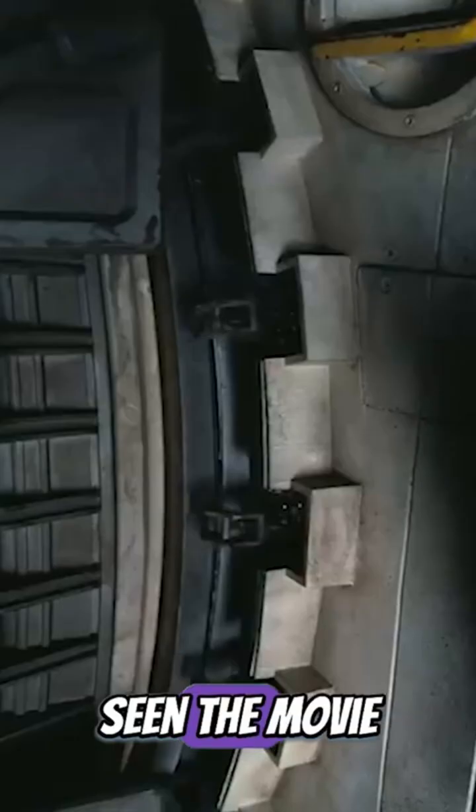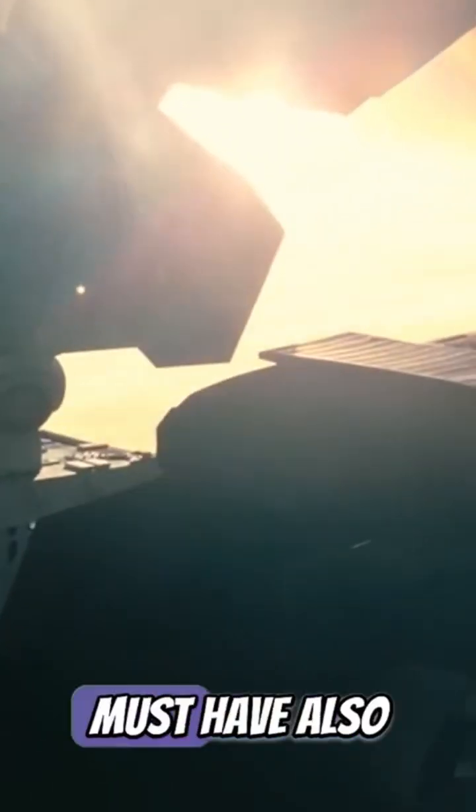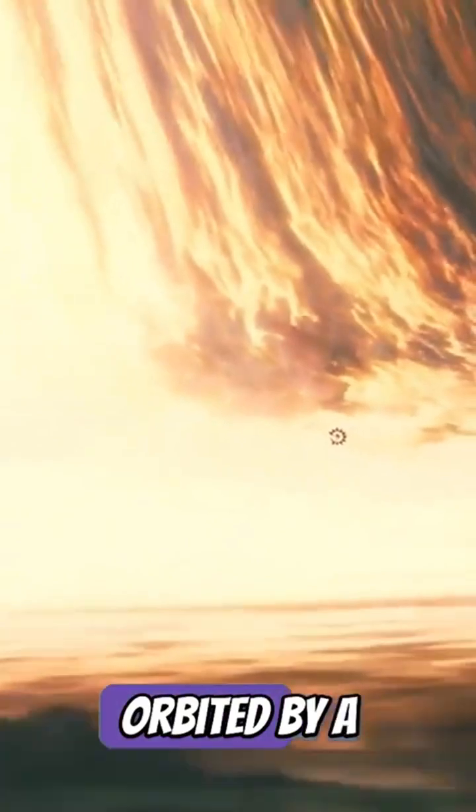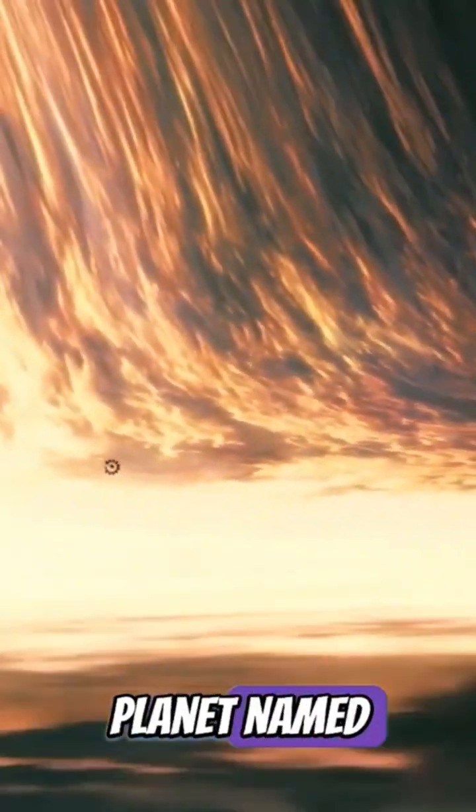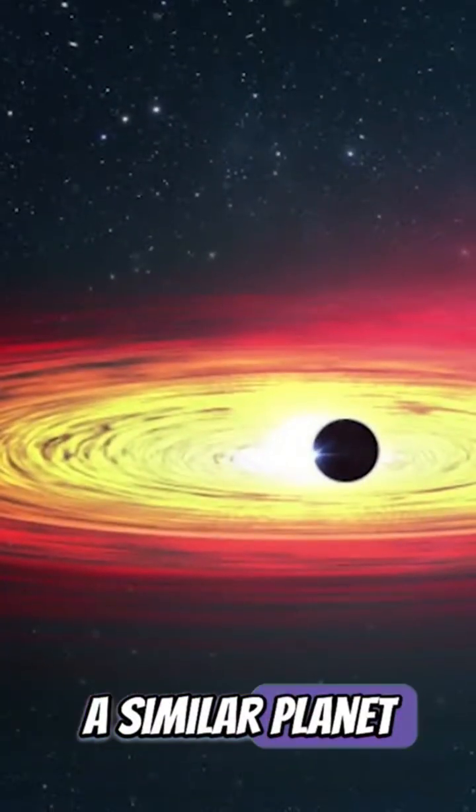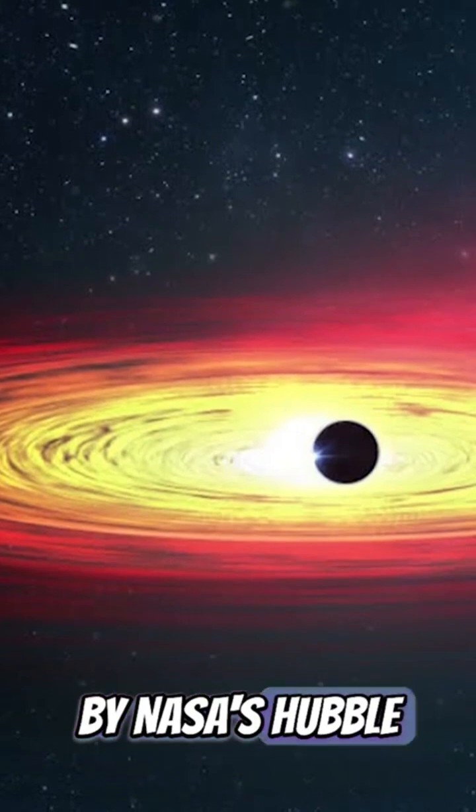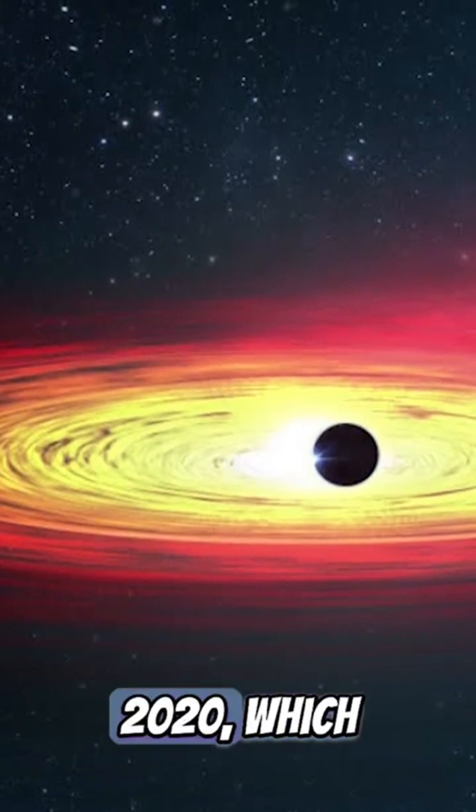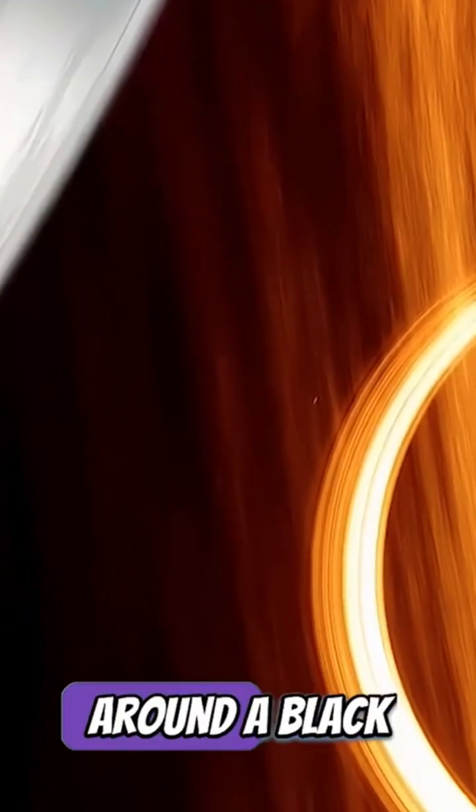Friends, if you have seen the movie Interstellar, then you must have also seen that in that movie, a black hole named Gargantua was being orbited by a planet named Miller. A similar planet was discovered by NASA's Hubble Telescope in the year 2020, which revolves around a black hole.